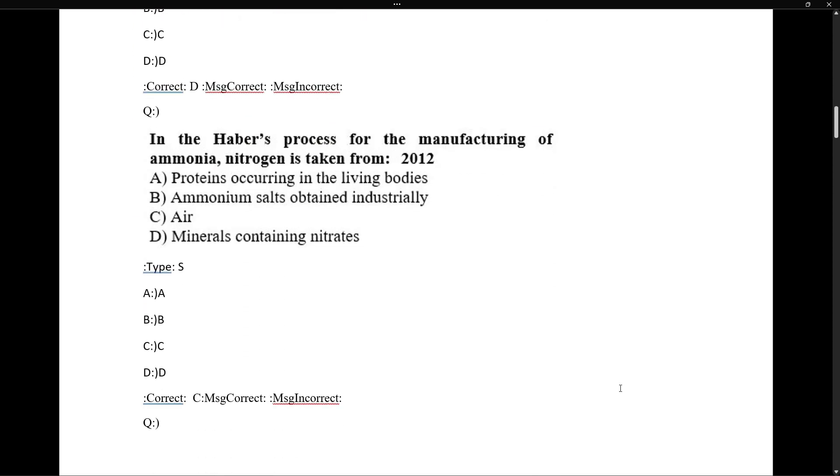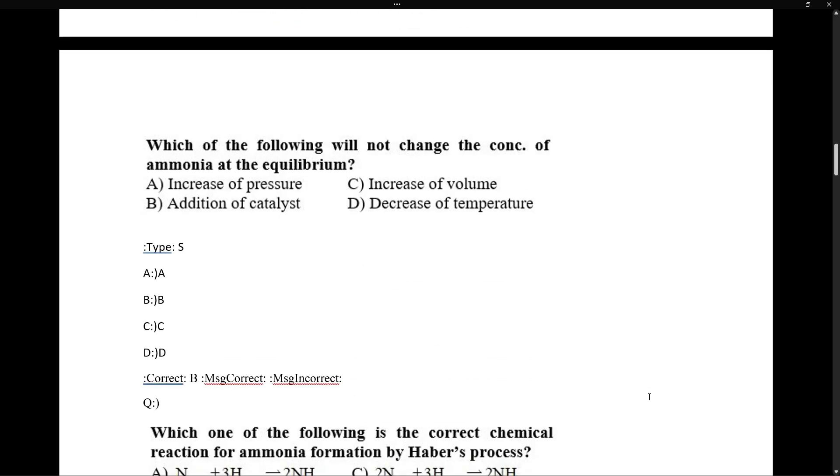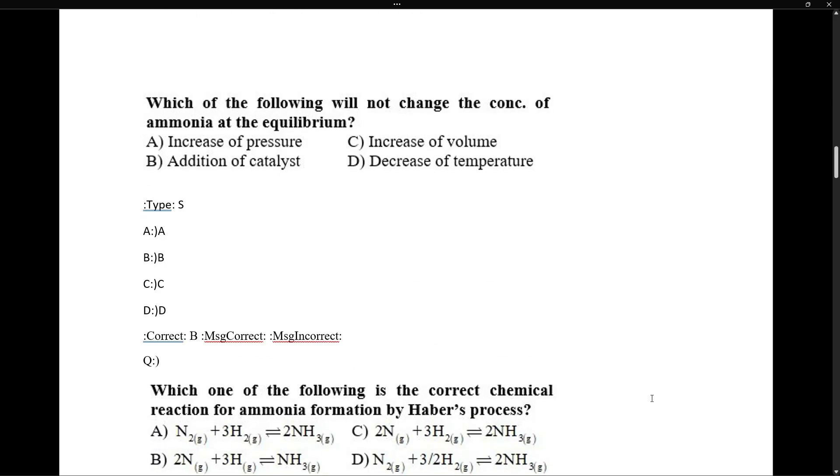In the Haber process for manufacturing of ammonia, nitrogen is taken from air. We take nitrogen from air and through distillation we separate nitrogen because air contains a large amount of nitrogen. Which of the following will not change the concentration of ammonia at equilibrium?